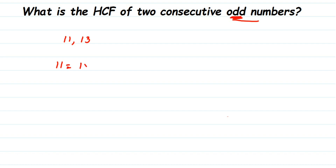So 11 = 1 × 11 and 13 = 1 × 13. You can see that there is only one common factor present in both, and that is 1. Apart from 1, there is no other common factor. So HCF of 11 and 13 is equal to 1.